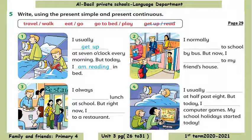Which one is the right choice? Eat, go, go to bed, play, travel, walk. Very nice — travel, walk. I normally travel to school by bus, but now I am walking to my friend's house. Very good! Number three: I always eat lunch at school, but right now I am going to a restaurant.